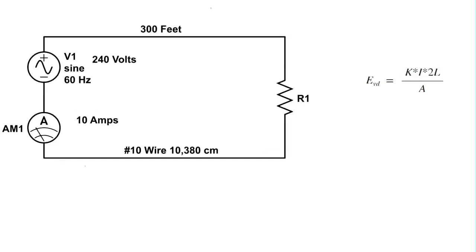Welcome to AC Theory Lesson 3. In this video we're going to do a voltage drop calculation. We've got a load here that is 300 feet away from the source. It has a source of 240 volts and is drawing 10 amps.